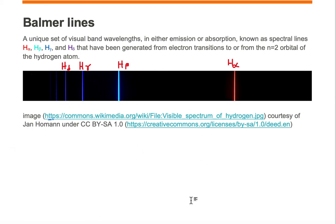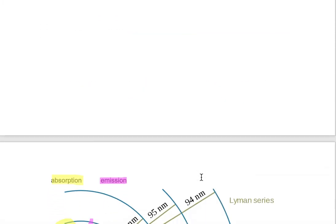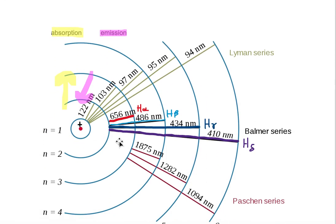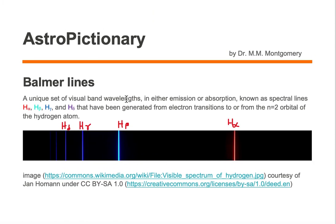These four visual band wavelengths have been generated from electron transitions to or from the n equals 2 orbital of the hydrogen atom. Electrons to or from will generate emission and absorption lines respectively, the emission lines of which are shown here, known as the Balmer lines.